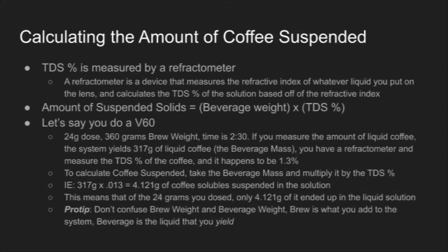With this next slide, I'm going to ask you to calculate the amount of coffee suspended. I know it sounds opaque as to why we're using these specific examples, but if you trust me through this video and the next, you'll have a much deeper understanding of how coffee brewing mechanics really work. To calculate the amount of coffee suspended in your solution, you take the TDS percentage — which you'd get from a refractometer — and multiply it by your beverage weight or beverage mass.